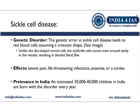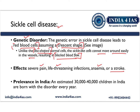Sickle cell is a genetic disorder in which the red blood cells assume the crescent shape. Usually, red blood cells are disc-shaped, but in the case of sickle cell disease, they assume the crescent shape. These sickle cells cannot move around easily in the vessels, resulting in blocked blood flow. This causes severe pain, life-threatening infection, anemia, and stroke in the patient.